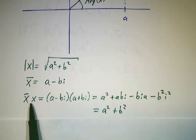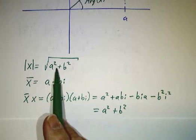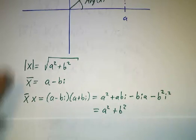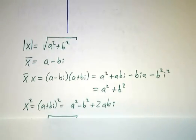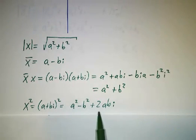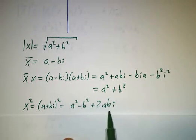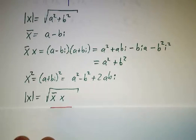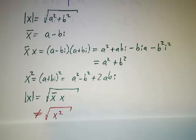So you don't get the length squared by multiplying x by itself. You get the length squared by multiplying the conjugate of x by x. If you'd looked at x squared, that would have given you a squared minus b squared plus 2abi, and that's useless for these purposes. What you really want is x-bar times x, not the square root of x squared.